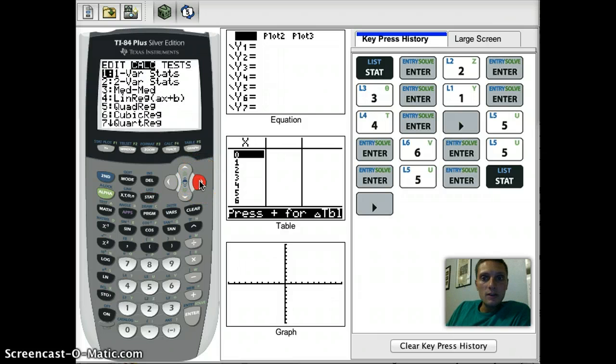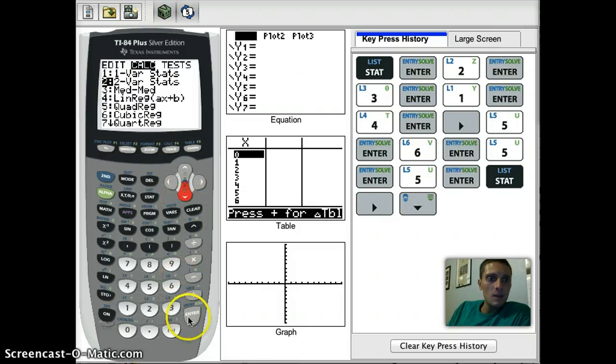Because we've put in two different sets of data, we're going to do the two variable stats, which is number two on our option list here. If for whatever reason you had only put in one set of data, you'd want to do the one variable stats, number one. So I'm going to click DOWN. Now our two variable stats is highlighted. I'm going to press ENTER.